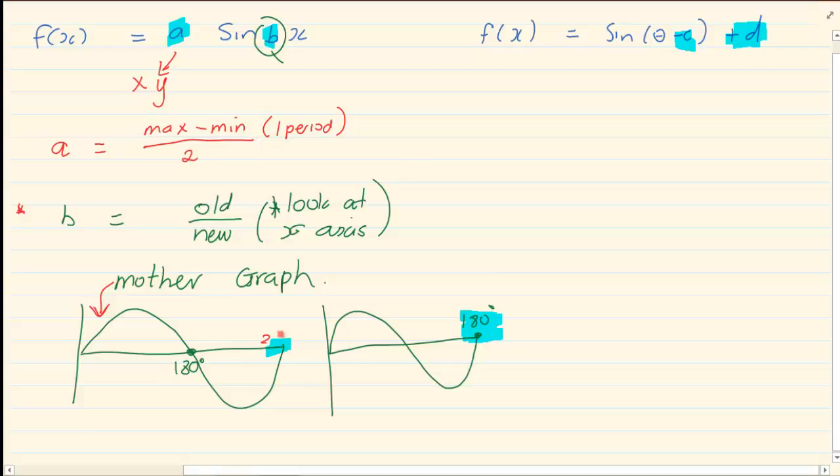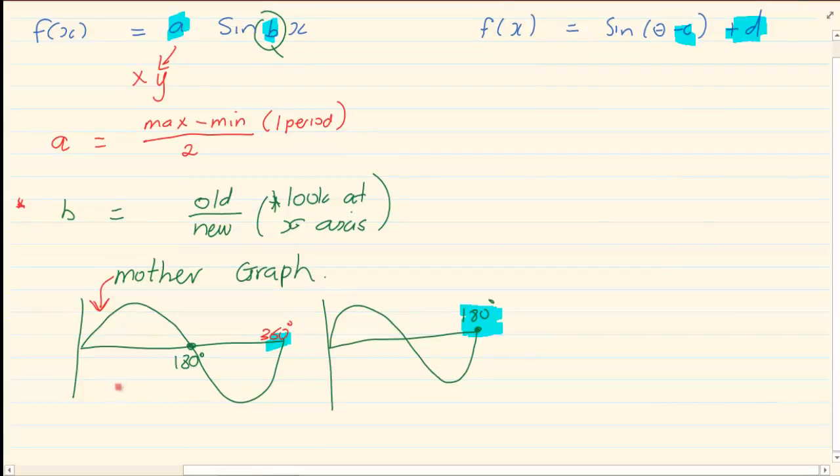But if I take a new graph and I tell you what is the equation of this graph, the old point at this specific point is this one here. If I am looking at the mother graph, which is this graph, then the end point is 360 degrees. So the old point would be 360 over the new point, which would be 180, and it would give me an answer of 2.